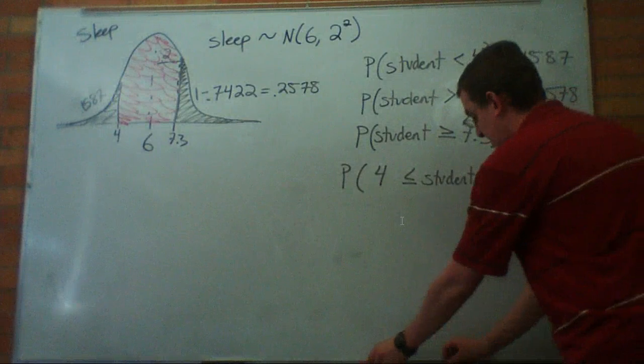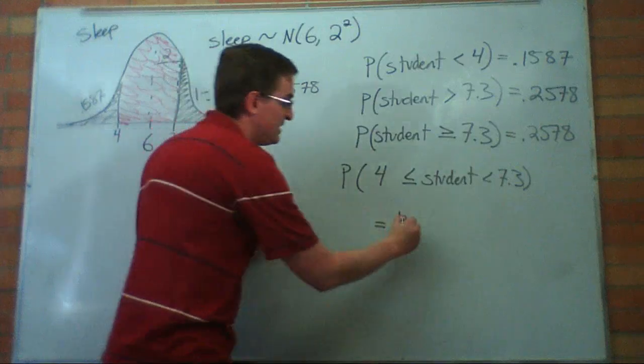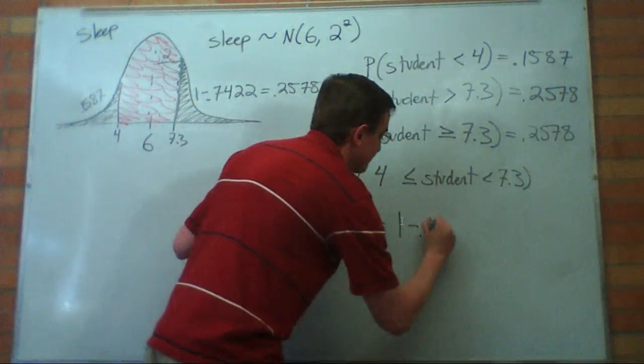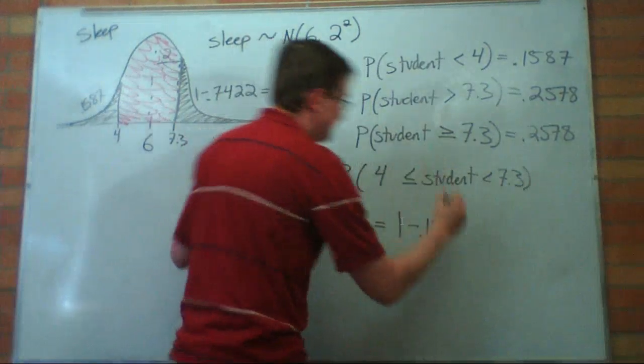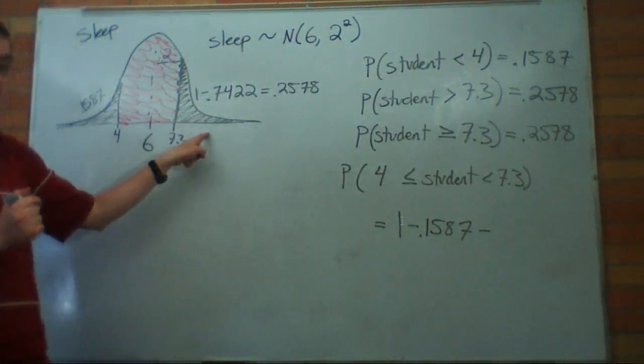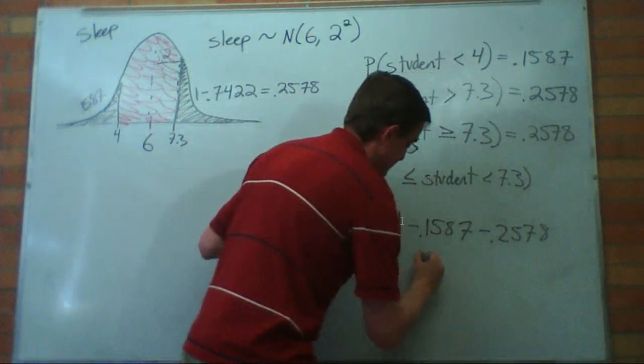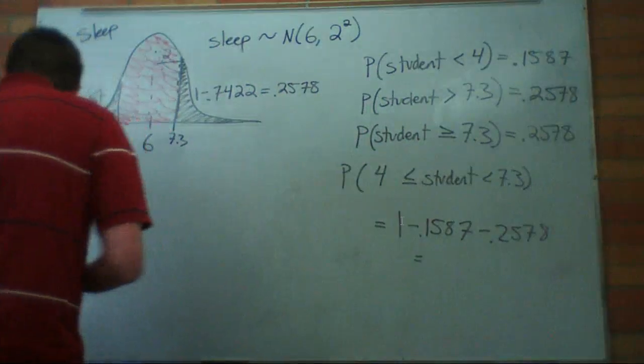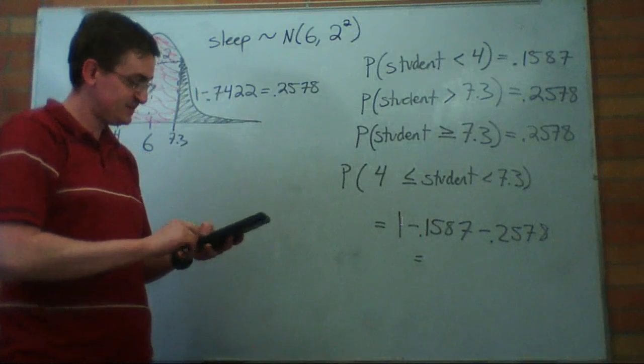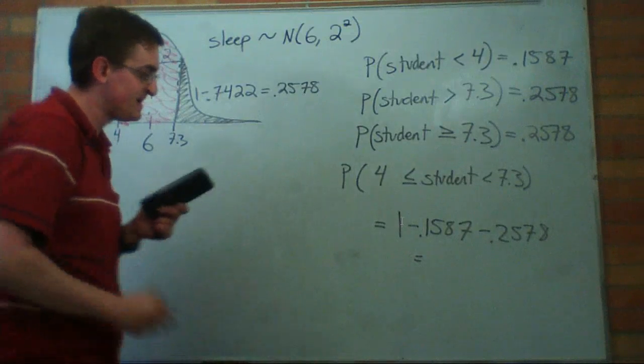I know the whole thing adds up to 100%. So, I'm going to start with 100%. And I'm going to subtract off this tail that I just calculated, the 0.1587. Now, I'm going to subtract off this tail, my 25.78%, so 0.2578. That will leave me with the piece in the middle, which is what I'm interested in. So, if I take 1 minus 0.1587, subtract the 0.2578, I'm left with 0.5835 as my area.